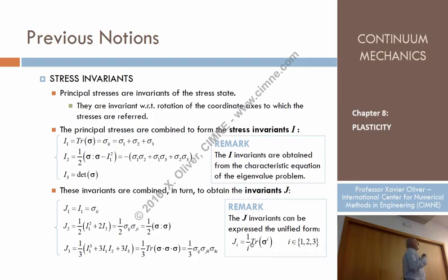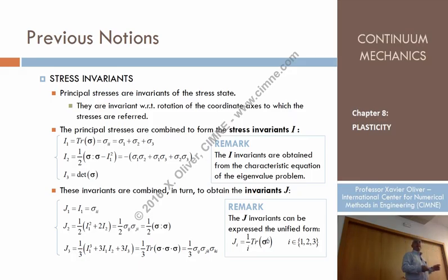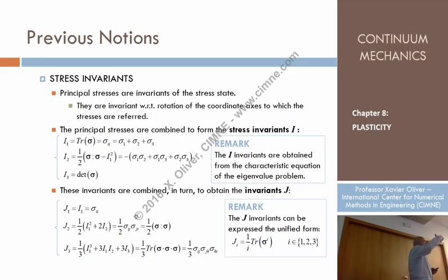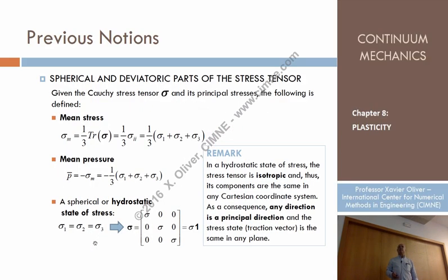There are invariants that are good in the sense that they can be appropriate to represent properties of materials or to characterize the behavior of the material, and we'll take advantage of that. There are infinitely many such invariants. For instance, sigma-1, sigma-2, and sigma-3 — the principal stresses — are also invariants, because they do not depend on the change of coordinates; they are always the same.